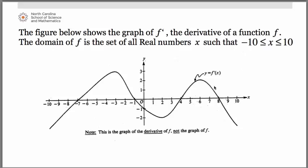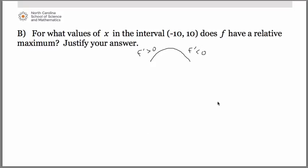Hopefully you've identified two places. At x equals negative 1, the derivative is changing from positive to the left to negative to the right. And also at x equals positive 8. So we have two x-values on the original function f at which we're going to have a relative maximum.